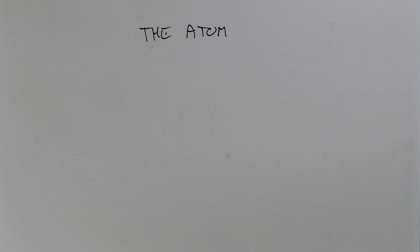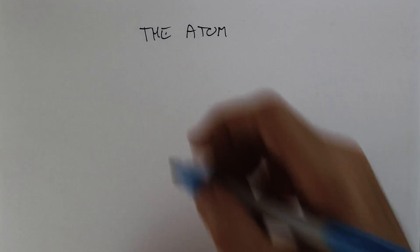The atom is made up of three subatomic particles. We call them subatomic because they are smaller than the atoms. They are subatomic, less than the atom.